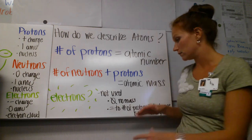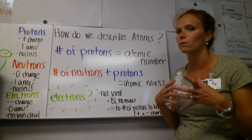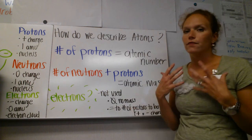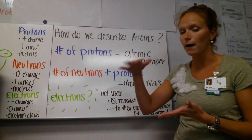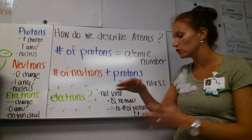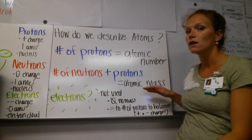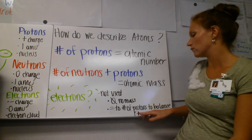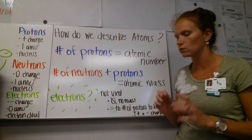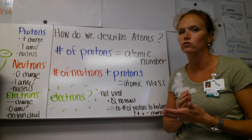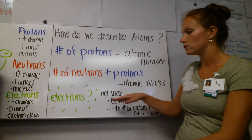Electrons are excluded from atomic mass for a couple of reasons. One, their mass is insignificant in atomic mass units. Also, electrons have a negative charge that is the exact opposite of the proton's positive charge. Those positive and negative charges counteract each other and always balance out. All atoms want to be electrically neutral — meaning they have the same number of electrons as protons, so the charges add up to zero.